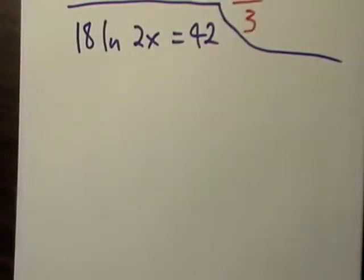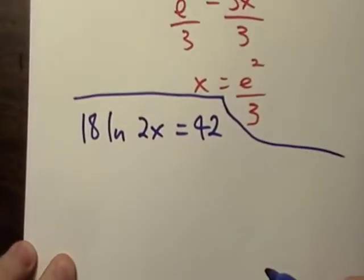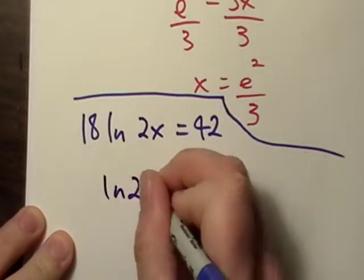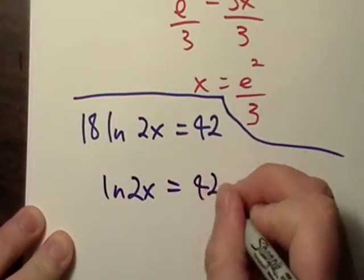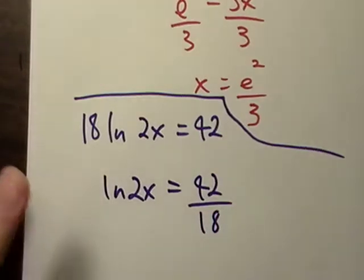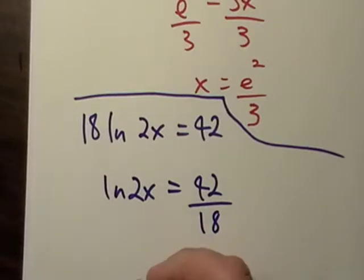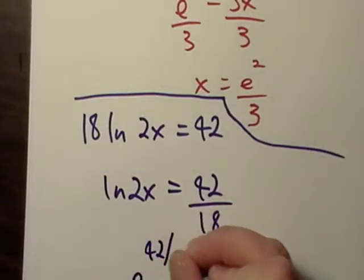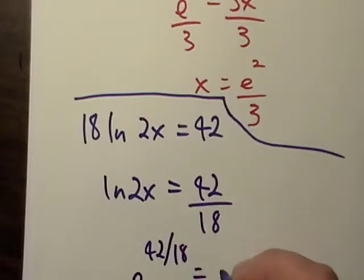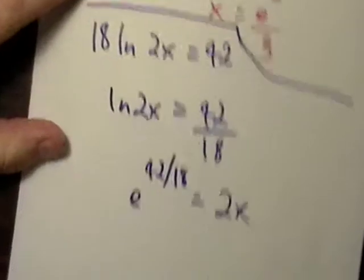All right. So 18 divided by 42, that's not a very good number, is it? Well, that's all right, I'm going to stick with it. So here we go. Now, we're just going to go natural log of 2x equals 42 over 18. Now this tells me that e raised to the 42 over 18 equals 2x.